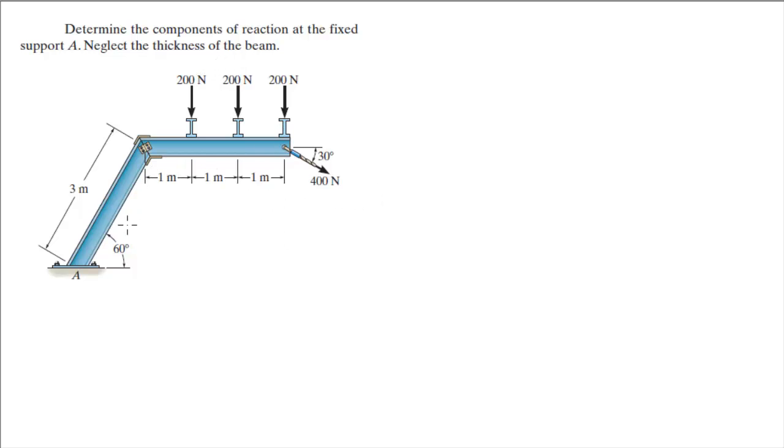So this problem becomes very easy because you only got reactions at A. Let's say we got a vertical reaction going up because all these forces are coming down including the 400N force, and you have a reaction obviously to the left. Let's call this AY, let's call this AX.